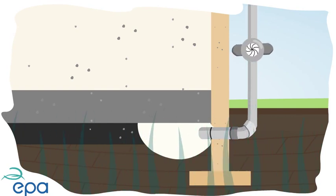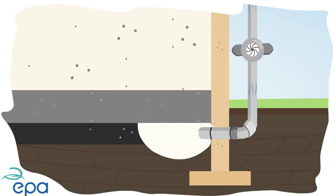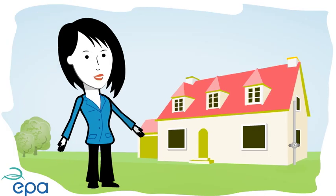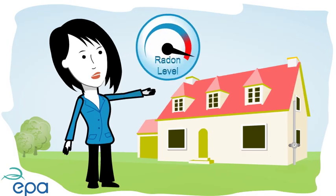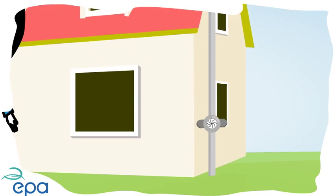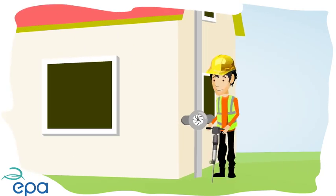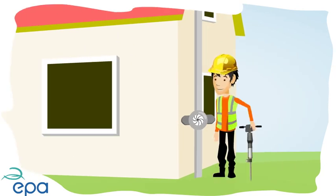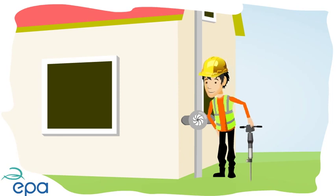The radon-rich air is vented to outside before it is drawn into your home. This can reduce radon levels in your home by up to 90%. An active radon sump can usually be installed in one day and all the work is carried out from outside your home.